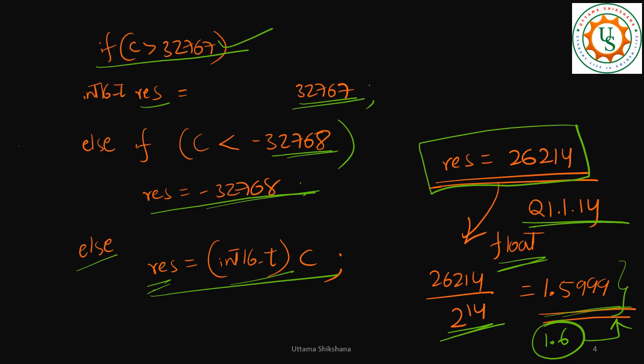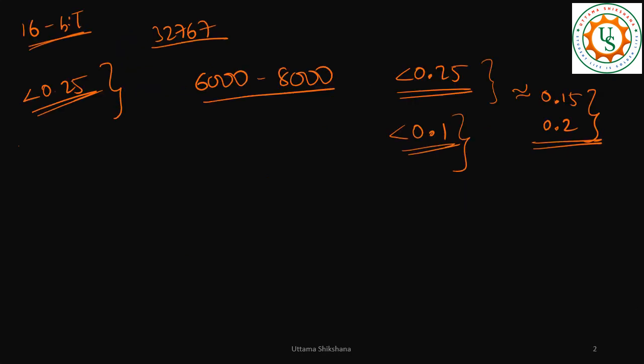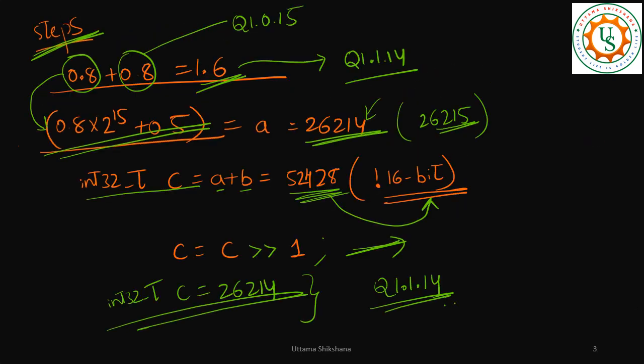Otherwise it's very close to 1.6, which is okay. We didn't choose the saturation operation and we didn't choose to keep it in the same Q format. Now the question is, as I was talking in the previous video, it's always better to go for Q1.0.15 format. There are plenty of advantages, especially for communication and signal-processing-involved algorithms.